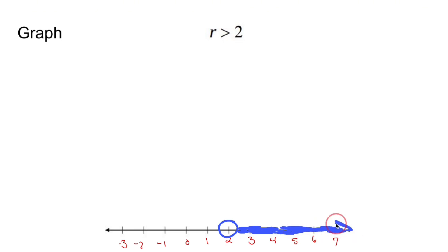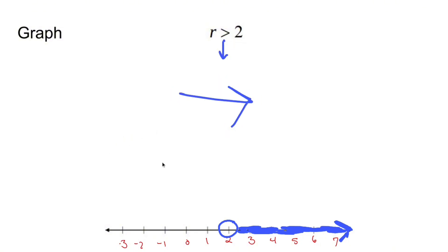An easy way to remember this: if you have an inequality and your variable is on the left, the symbol acts as an arrow in the direction you're supposed to go. What this graph represents is any number that is shaded — like 6, like 100, like 2.9 — you can plug in here: 6 is greater than 2, 100 is greater than 2, 2.9 is greater than 2. It all works. You can't plug in negative 2, 0, or regular 2 and have that be a true statement.